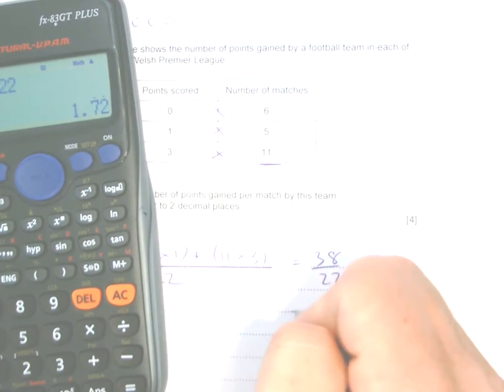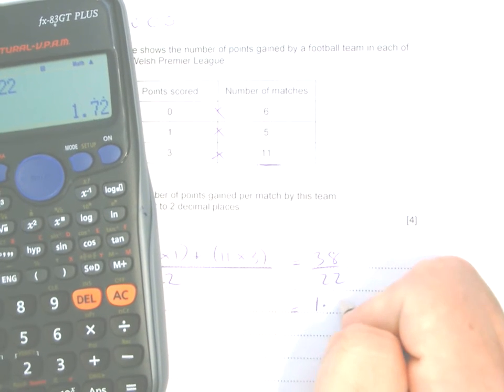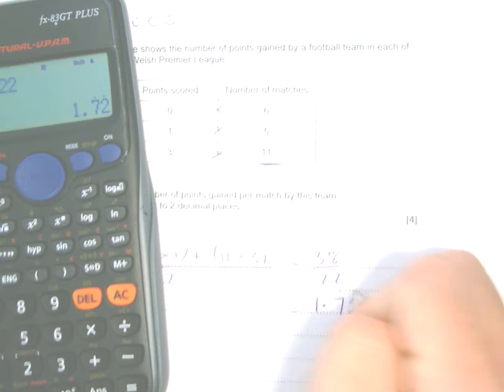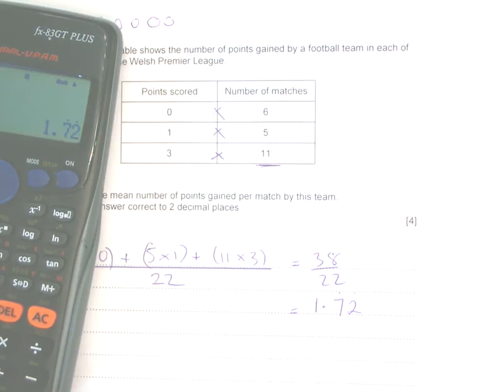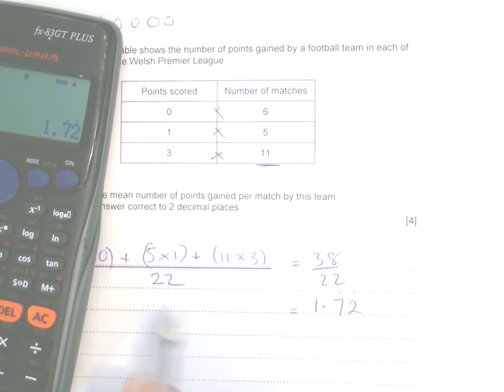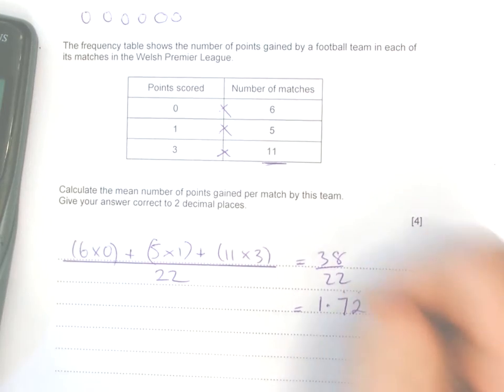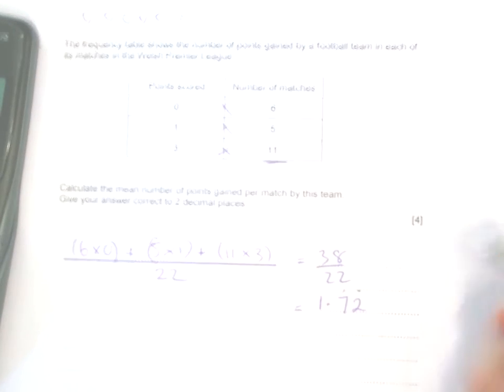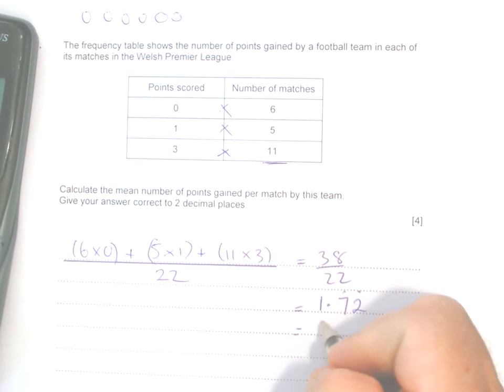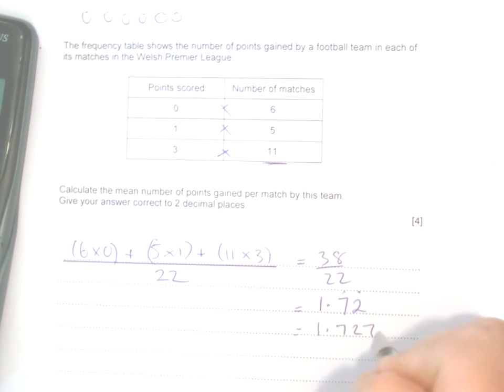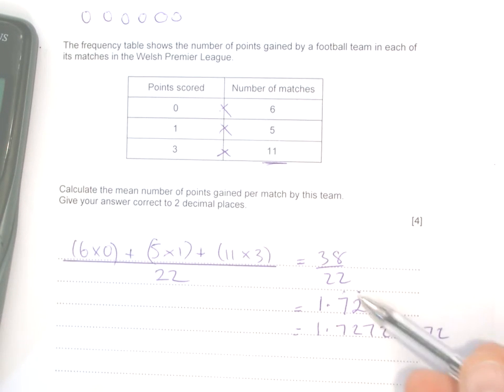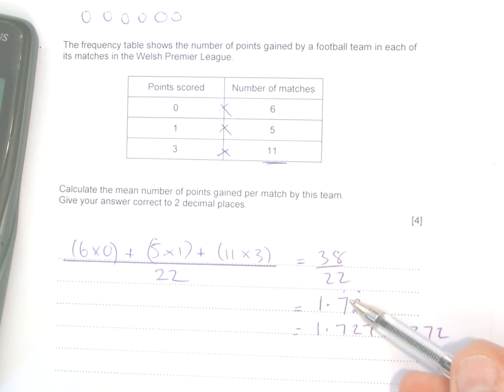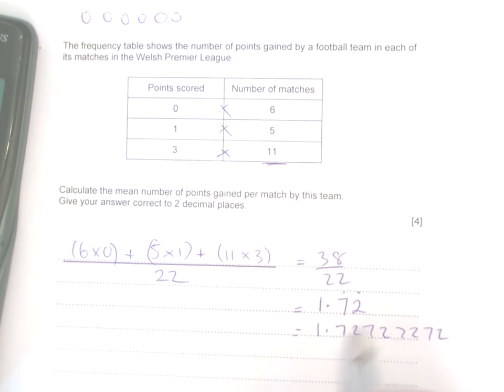You can see here on my calculator: 1.72, and there's a dot above the seven and a dot above the two. Don't worry too much about that. The dots above them just mean that they are repeating, so that basically means 1.727272... The pattern is repeating: seven two, seven two, seven two, and so on.